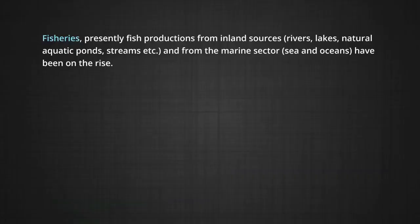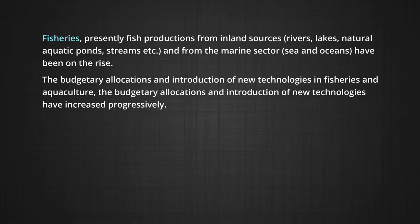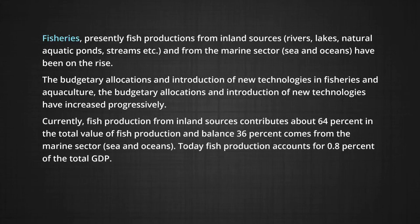In case of fisheries, fish production from inland sources such as rivers, lakes, natural aquatic ponds, and streams, and from the marine sector — sea and ocean — have been on the rise. Budgetary allocations and introduction of new technologies in fisheries and aquaculture have increased progressively. Currently, fish production from inland sources contributes about 64% of the total value of fish production, and the balance 36% comes from the marine sector.